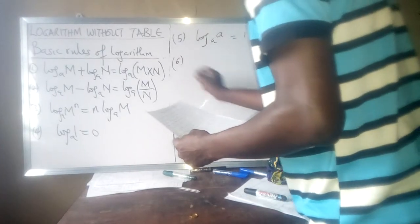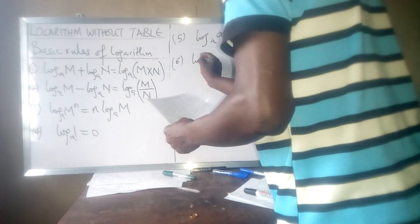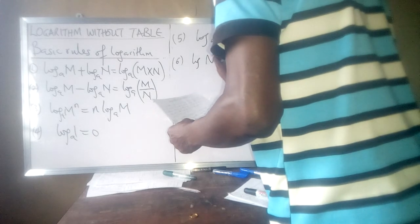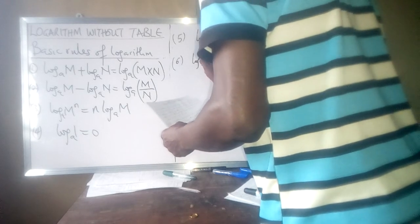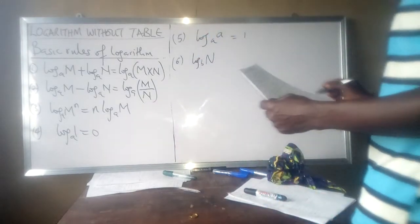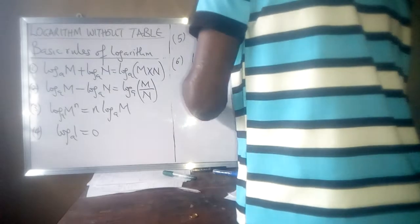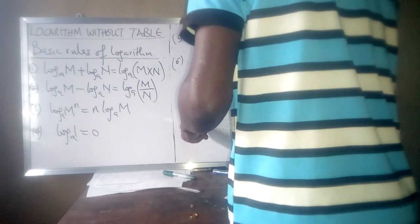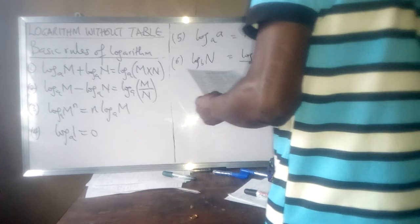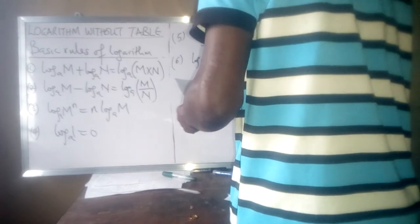Then the sixth one. Log n base b can be written as log n base a all over log b base a.